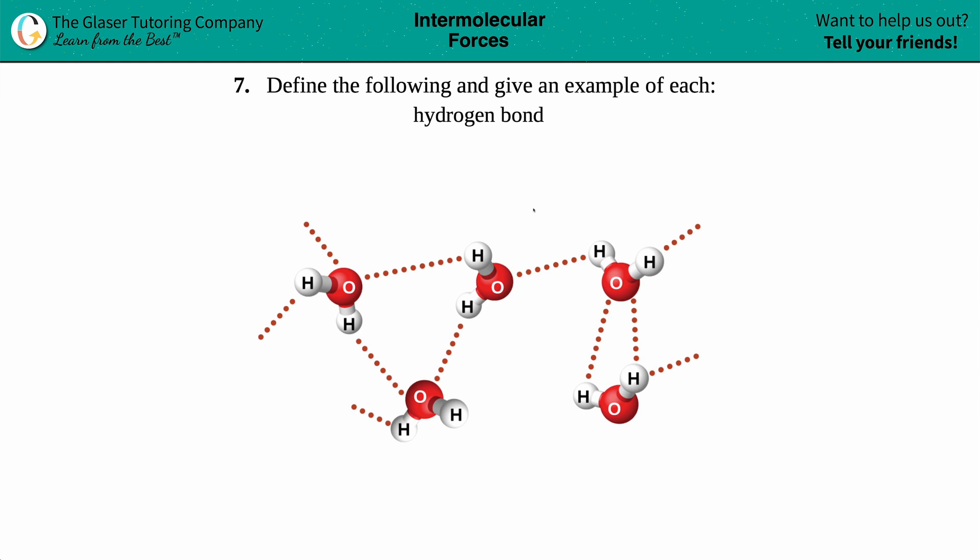Number seven, define the following and give an example of each: hydrogen bond. Okay, now in this case, when we're talking about a hydrogen bond, we are not talking about just a bond to hydrogen.